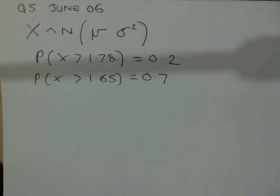Okay, we're going to do question 5 from the June 06 S1 paper. We've been told that the height a person can jump is normally distributed, and we're given two pieces of information.